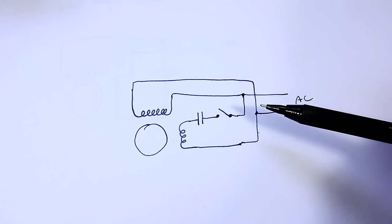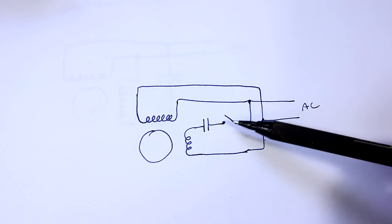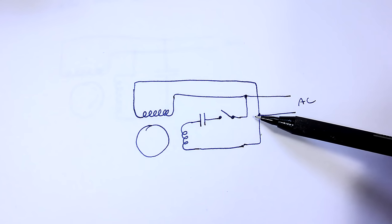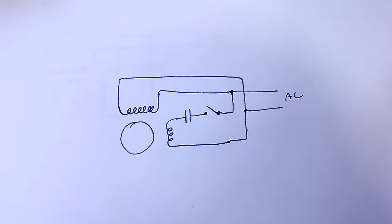The schematic for this motor is very similar to our split phase motor with one winding directly on the AC and the other one in series with the capacitor on the AC. Except that this winding is much thinner and we turn off the winding once the motor's up to speed.